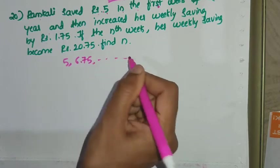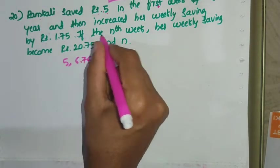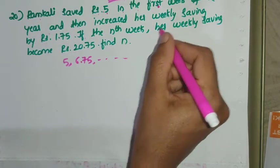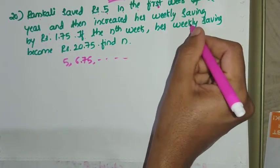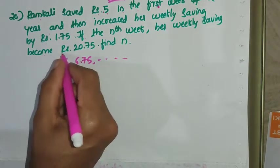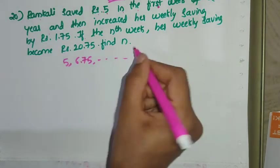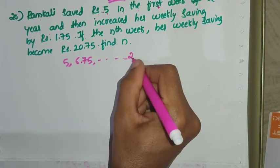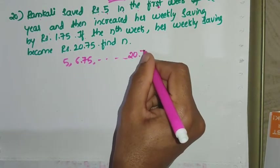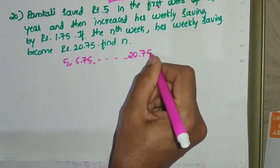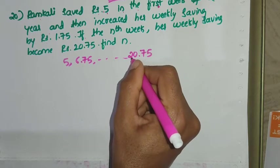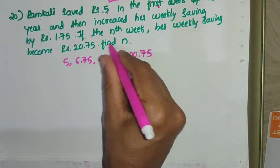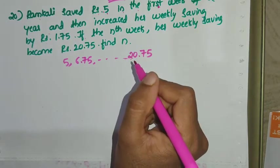20th question. In the first week her weekly saving is Rs. 5, and it becomes Rs. 20.75 in the last week. Her saving in the last week is Rs. 20.75. Find N, the number of weeks.